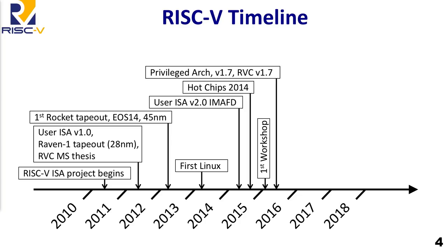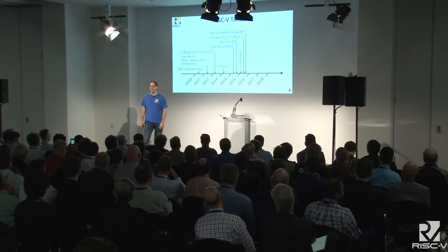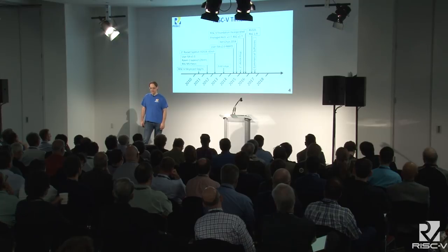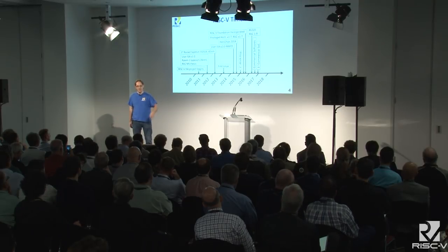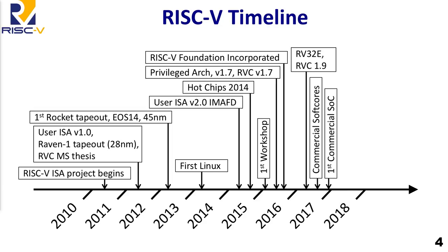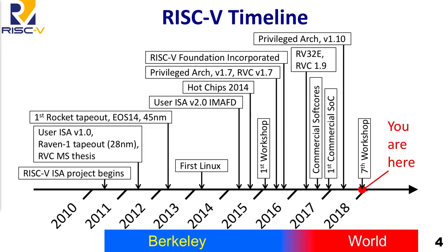The first workshop was only less than three years ago, January 2015 — it's crazy to think how much has happened in less than three years. The privileged architecture spec wasn't put out until halfway through 2015, even though we'd been working on it for a while. In August 2015 we incorporated the RISC-V Foundation. The first commercial soft cores started appearing in 2016, and the first commercial SoC appeared at the end of 2016 from SiFive. We froze the privileged architecture at 1.10, and here we are at the seventh workshop.